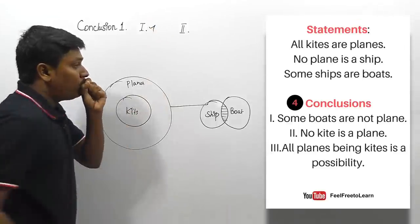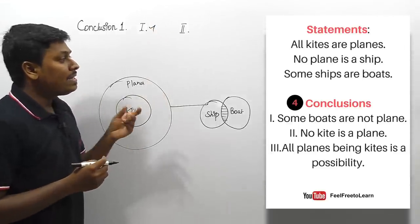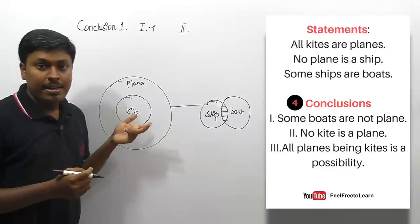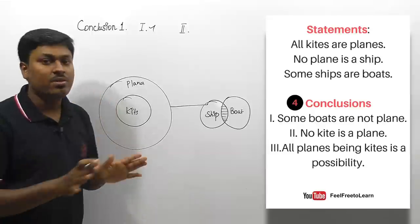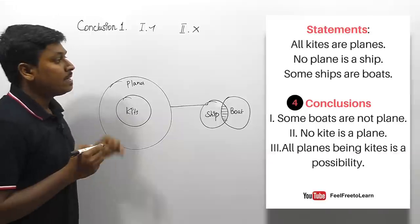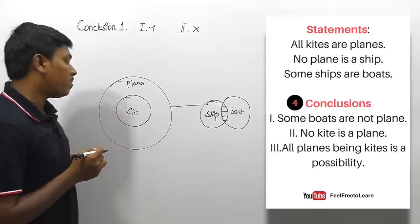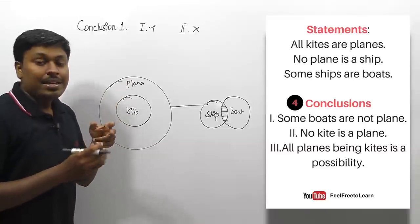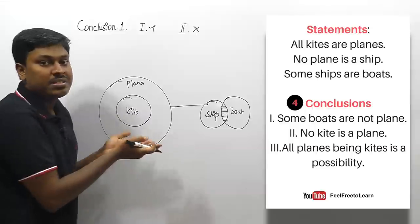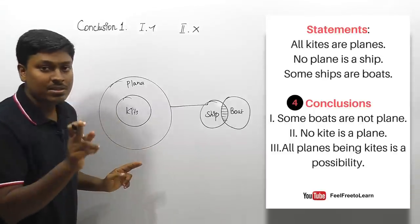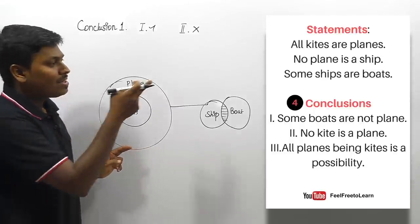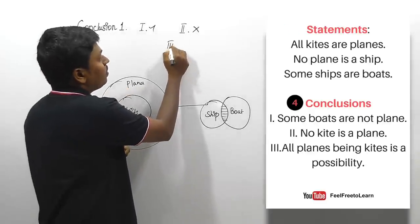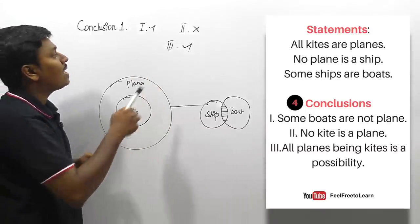Conclusion number one follows. Conclusion number two: 'no kite is a plane' — kite and plane are inside a single Venn diagram, and if parameters are inside a single Venn diagram, 'no' conclusion does not follow. Conclusion number three: 'all planes being kite is a possibility' — planes and kites are inside a single Venn diagram, and if all parameters are inside a single Venn diagram, possibility follows. So the answer is conclusions one and three follow.